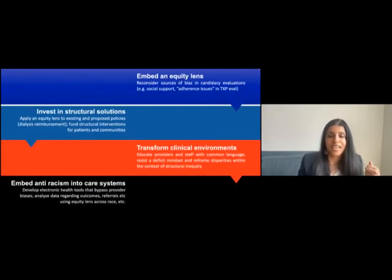Finally, we should embed this equity lens when thinking about everything we do. When thinking about the best candidate for a kidney transplant, interrogate things like adherence and social support and try to understand how to overcome barriers. Invest in structural solutions like policy changes for dialysis reimbursement and embed anti-racism into our care systems. I want to leave some time for questions. Thank you all so much.